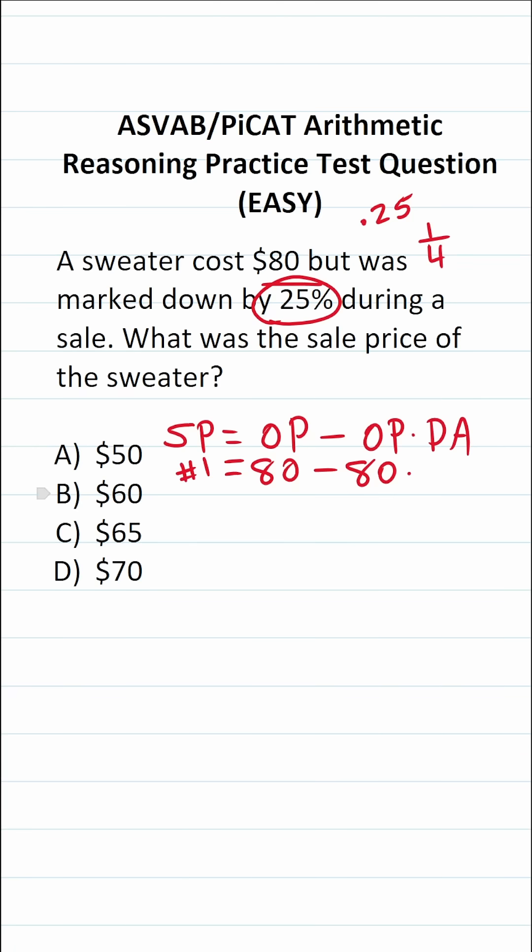So for this first method, I'm going to solve it using the fraction. So this becomes 80 minus 80 times one-fourth. I'm going to do that off to the side, 80 times one-fourth. I could write 80 as a fraction by placing it over one.